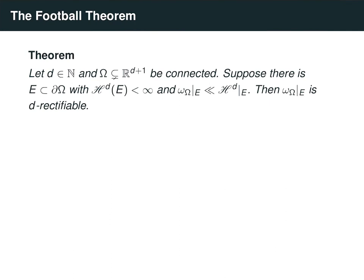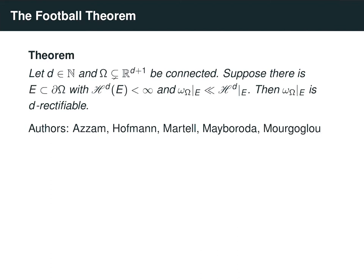The results in high-dimensional Euclidean space were mostly sufficient conditions for absolute continuity of harmonic measure. However, there is one result giving necessary conditions that is quite general, requiring no strong assumptions like non-tangential accessibility. Given a connected open set in R^(d+1), if there is some subset of the boundary where harmonic measure is absolutely continuous with respect to Hausdorff measure, then harmonic measure is d-rectifiable — it can be covered up to a set of measure zero by Lipschitz images and is absolutely continuous with respect to Hausdorff measure. At least one author calls this the 'football theorem,' since there were enough authors to form a football team: the speaker, John Azzam, Steve Hofmann, Jose Maria Martell, Svitlana Mayboroda, Mihalis Mourgoglou, Xavier Tolsa, and Alexander Volberg.